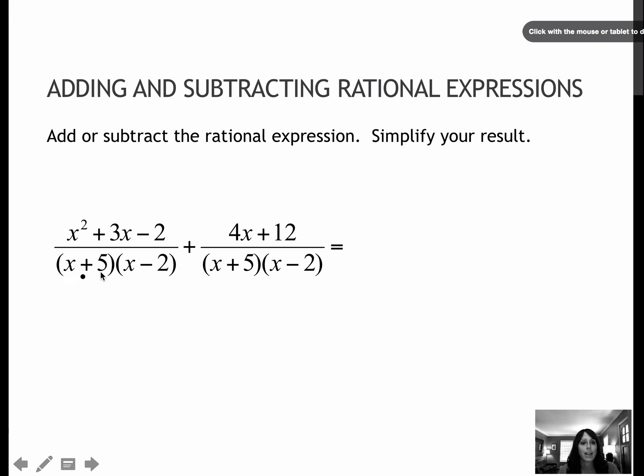Here I have x plus 5, x minus 2, and again, it's the same for both, so that, of course, will be my new denominator as well. This is a plus, so I don't have to worry too much about rewriting it. I'm just going to combine like terms. I have x squared. I've got a 3x and a 4x, which together make 7x. And I've got a minus 2 and a plus 12, which together make plus 10.